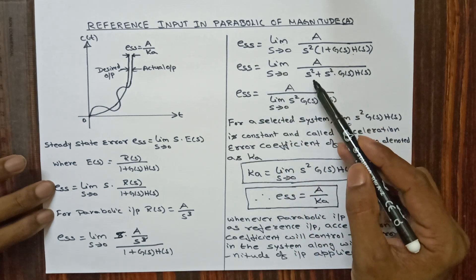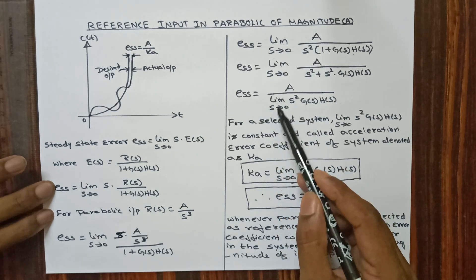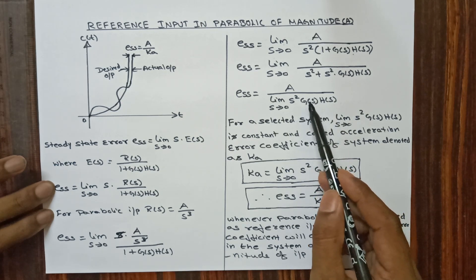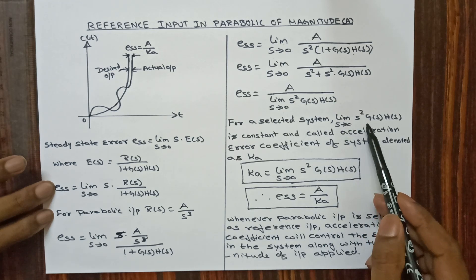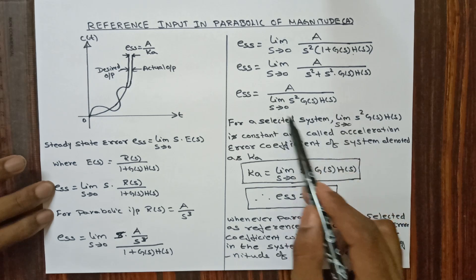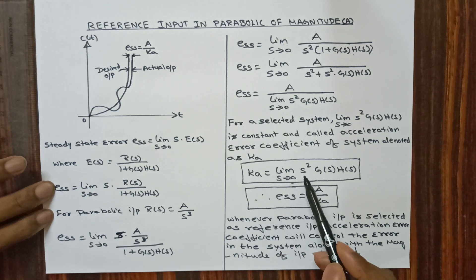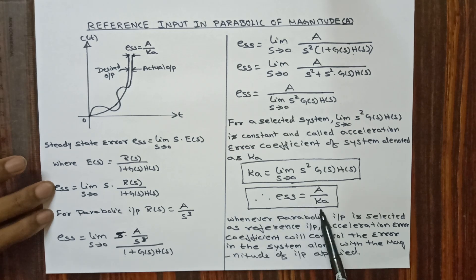Further, ESS is equivalent to limit s tends to 0, A divided by s squared plus s squared into G(s) into H(s). By considering the limit s tends to 0 we get ESS equivalent to A divided by limit s tends to 0, s squared into G(s) into H(s). We don't know the value of G(s), so we consider this whole term as a constant. For a selected system, limit s tends to 0, s squared into G(s) into H(s) is constant and called the acceleration error coefficient, denoted as Ka. Substituting, ESS is equivalent to A divided by Ka. Whenever parabolic input is selected, acceleration error coefficient controls the error along with the magnitude of input applied.